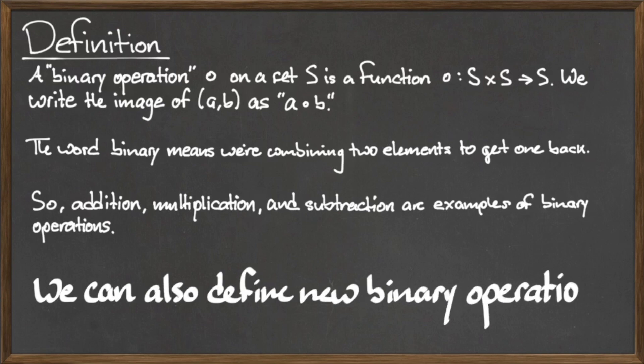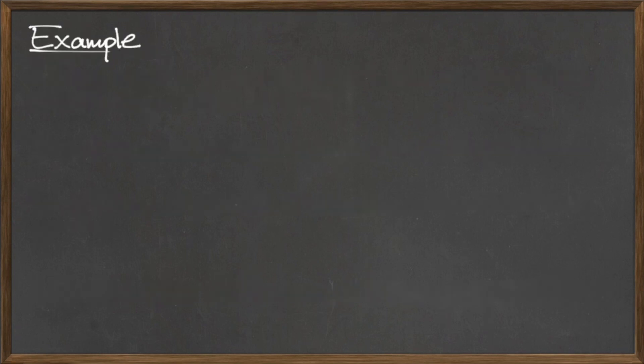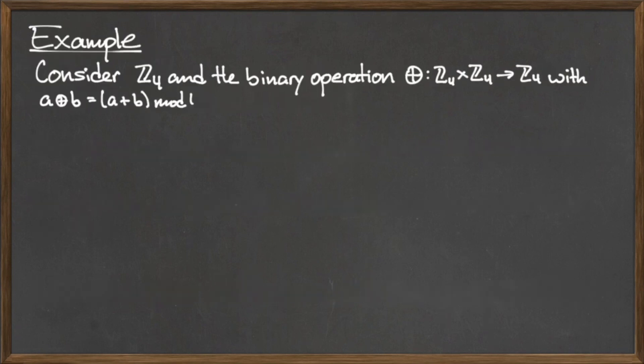We can also define our own binary operations on a set of our choosing. For example, consider the set Z mod 4 and the binary operation ⊕ from Z₄ × Z₄ to Z₄, with a ⊕ b equal to the quantity (a + b) mod 4.